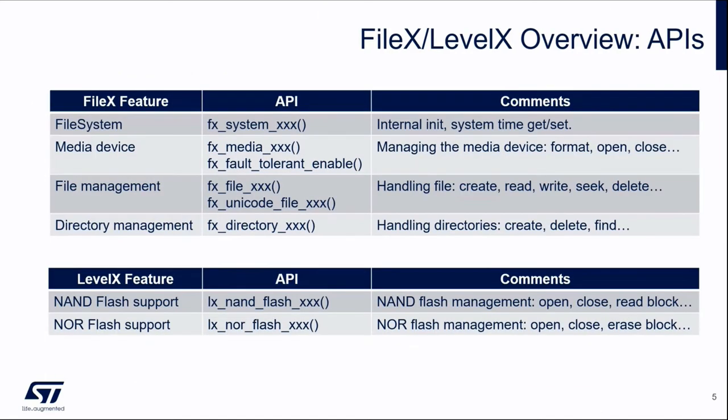A quick overview of the API: the APIs are written in an easy-to-understand way. You have APIs for the file system, for media, and for the file itself — create, read, write, sync, delete, etc. — or for directory management: create, find, delete, and so on. The root of each API name is always fixed based on the category: media, file, directory, flash, etc.